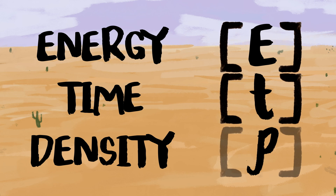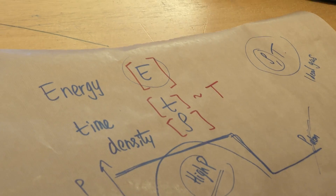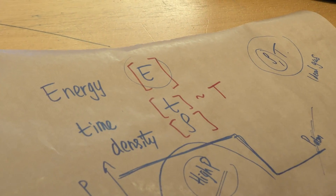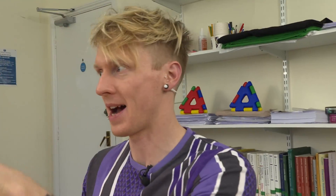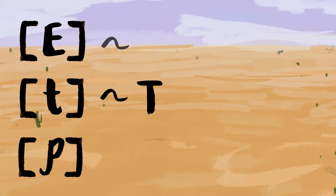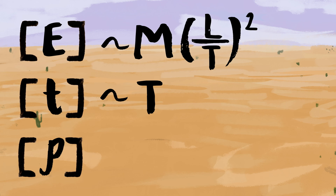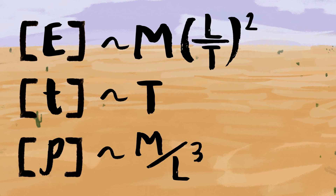We denote units with square brackets in maths. Time is easy — units of time are just T, seconds. For energy, think of kinetic energy: one-half times mass times velocity squared, so the units are mass times velocity squared. Velocity is distance divided by time, so that's distance over time squared. We end up with mass times length squared over time squared for the units of energy. And density is mass per length cubed, because we're working in 3D — kilograms per meter cubed, for example.